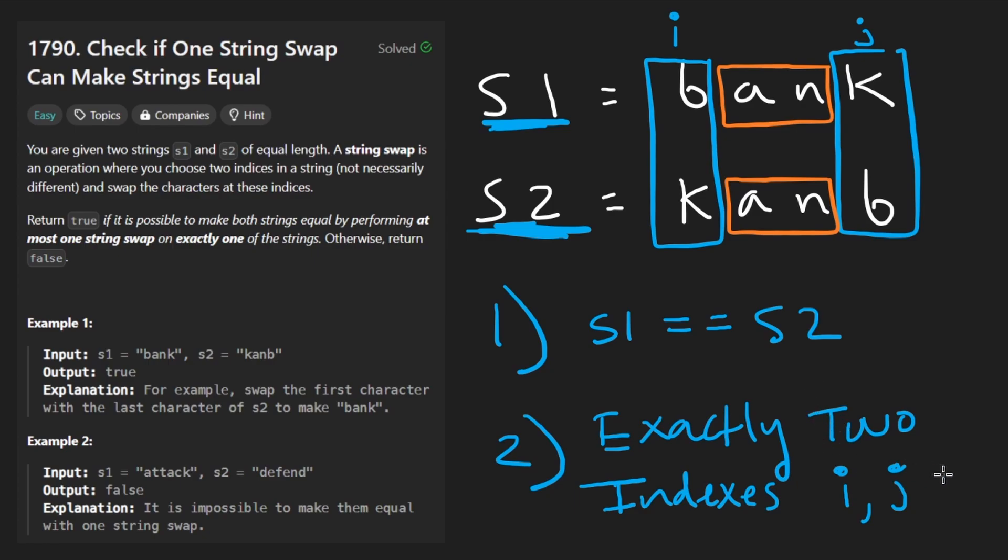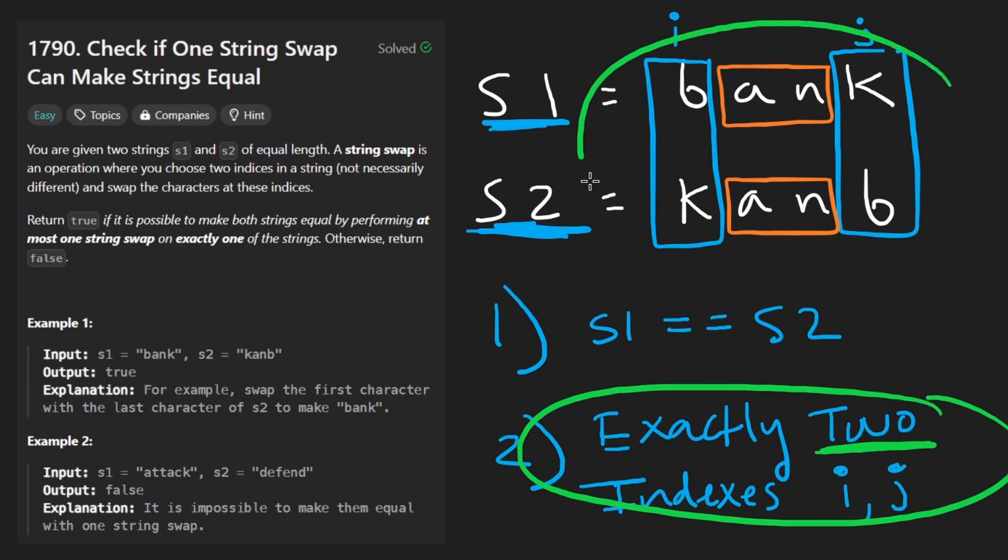And if we can identify all of the differing indexes and it happens to be that there are indeed exactly two, that can help us solve the problem. But just the fact that there are two differing indexes doesn't necessarily mean that the strings could be made equal.